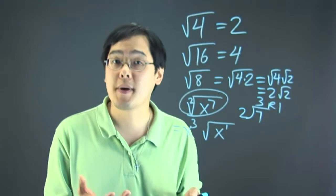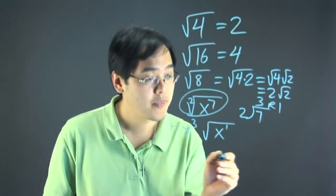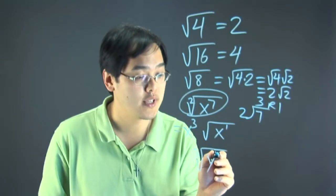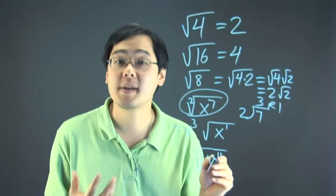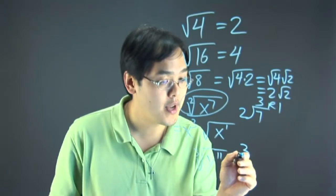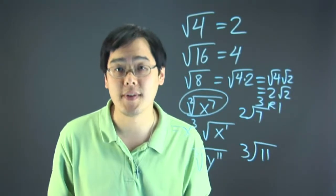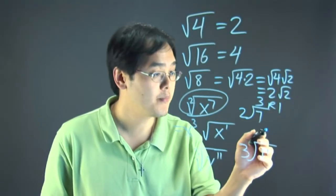Let's talk about how to evaluate this using cube roots. If you want to find the cube root of y to the 11th, same kind of idea. Take the 3 on the outside, divide into the inside exponent, which is 11. 3 goes into 11 three times remainder 2.